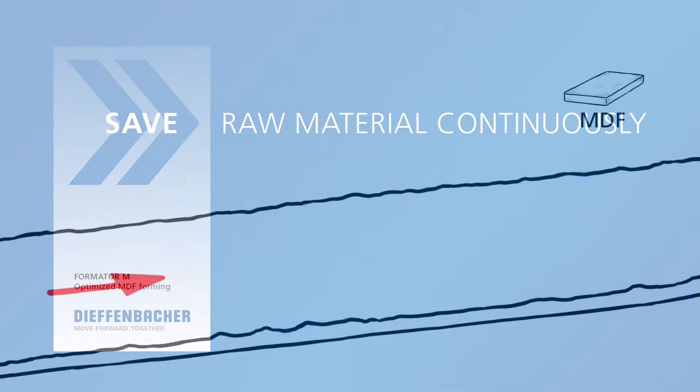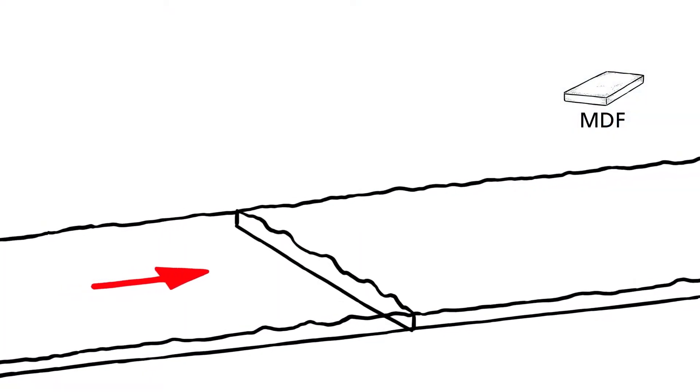In the production of MDF boards, it is impossible to avoid irregularities when forming the mat. To ensure there are no points at which the mat contains insufficient material, meaning it would not meet requirements for high quality, more material is spread than would ideally be necessary.